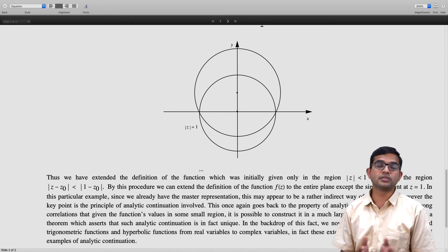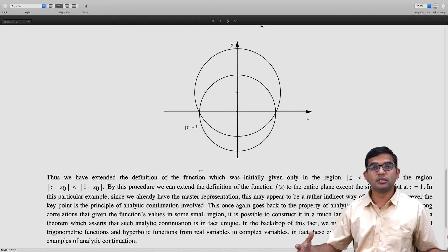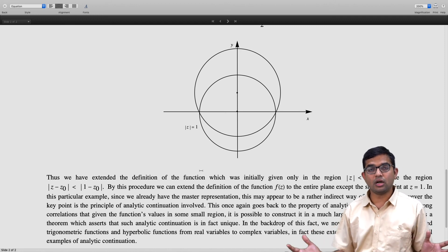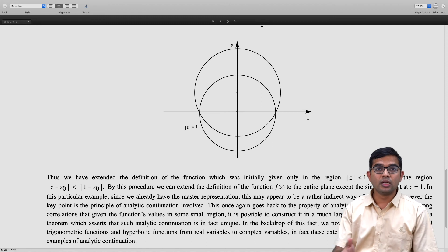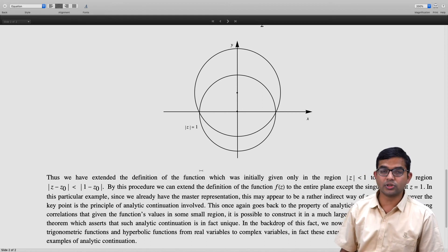This won't happen, for example, if you are working with functions of a real variable. You cannot—there is no unique way of extending your function to a bigger region such that the two functions overlap in your smaller region and then you impose some other nice properties. It doesn't work the way analytic continuation works for functions of a complex variable.